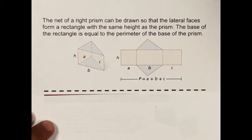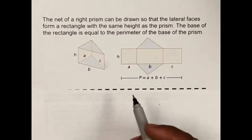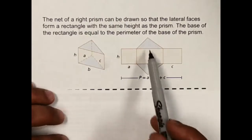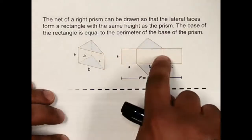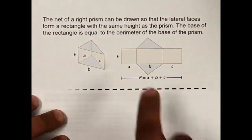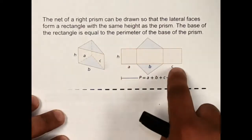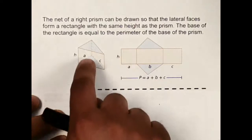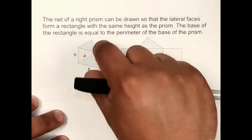If we take this triangular prism and unfold it, we end up getting the two triangular bases and three rectangles in the middle between them. This part — H, A, B, and C — that's what we'd be looking at for just the lateral surface area, which is these rectangles in between the two bases.